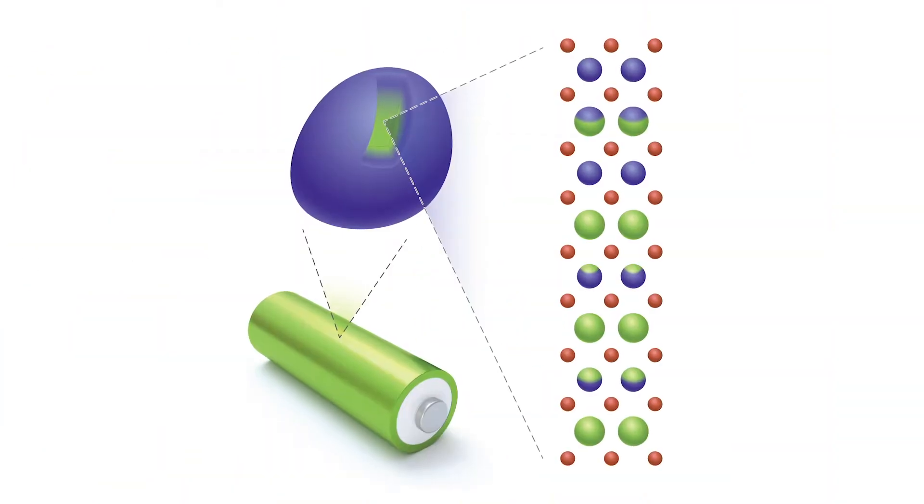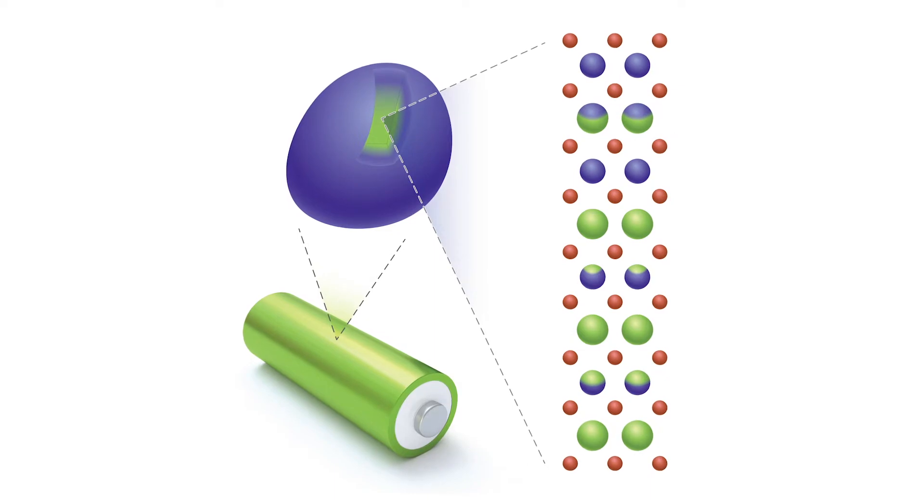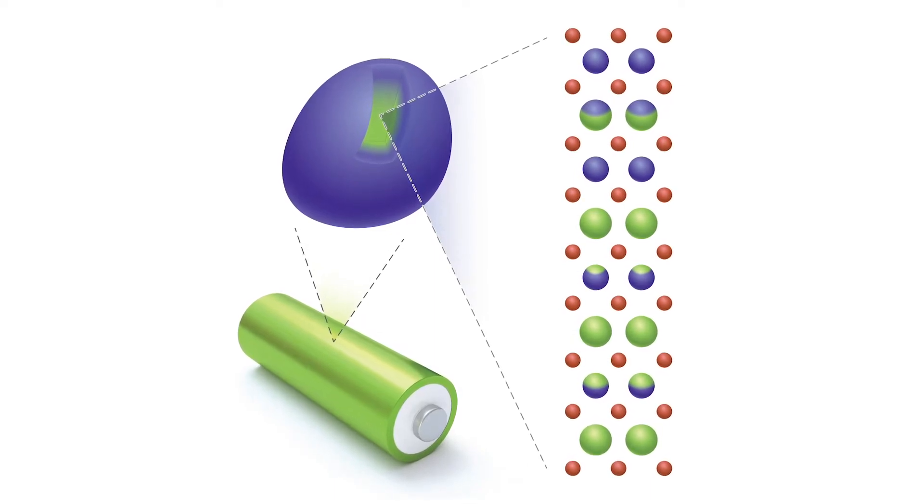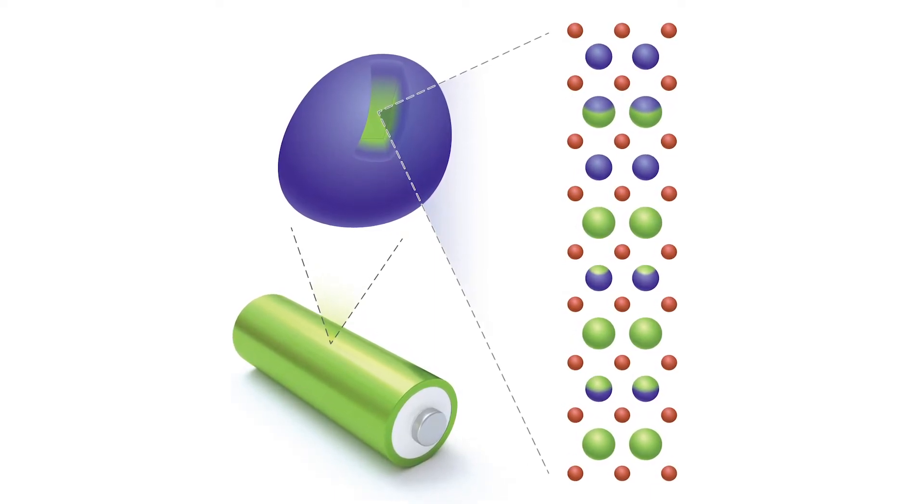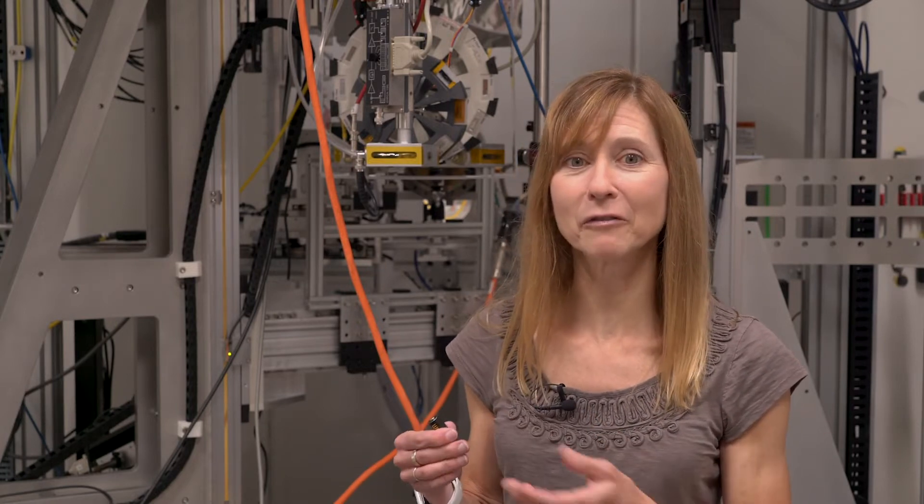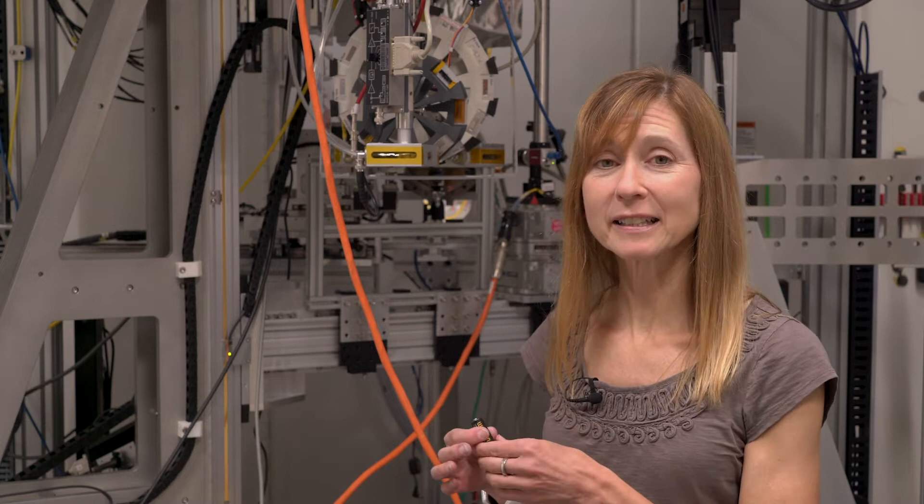The example that I want to give you today is batteries. A lot of work goes on at this beamline to study batteries and how they actually function in real time. Batteries are really important because you want the battery in your cell phone for example to be smaller, you want it to charge faster, you want it to hold the charge longer and you don't want to have to change the battery after having the phone for a few years. So the advantage of the ISS beamline is we can actually study what's happening in the battery in real time.